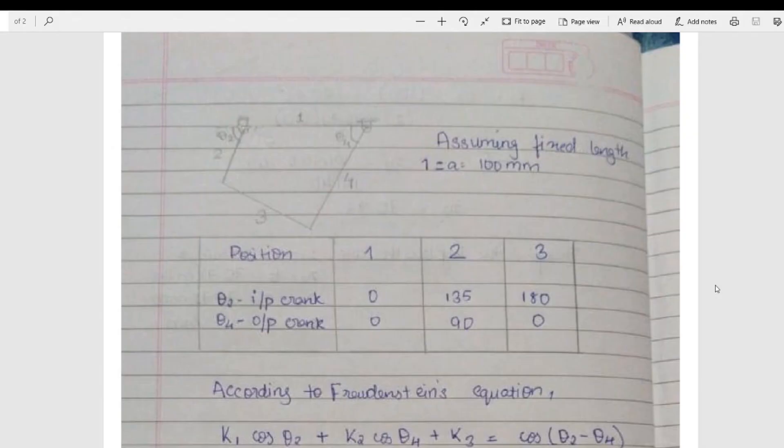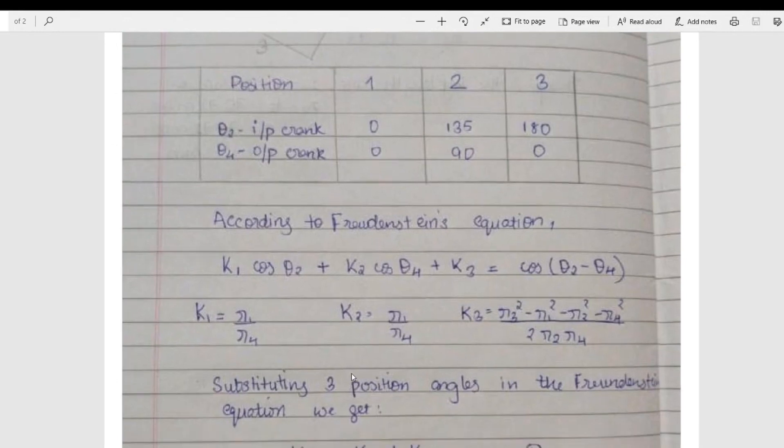Hello everyone. I am Vinit Pahilajani and today I am going to explain the method we used during synthesis of our four-bar mechanism. That is Freudenstein method for four-bar mechanism. In this method, we considered three positions of input and output crank, that is link number two and link number four which are inclined at an angle of theta two and theta four.